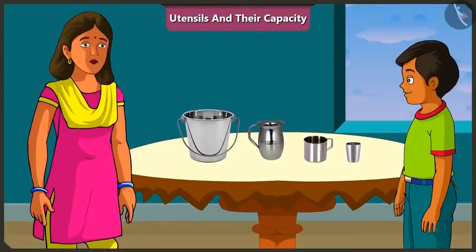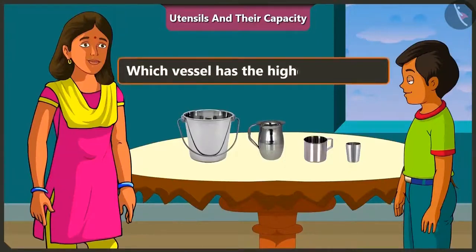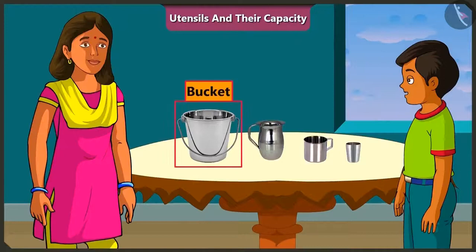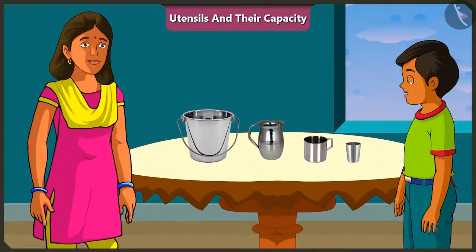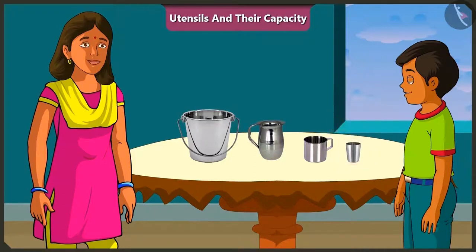Great! Mishtu, now tell me, which of these vessels has the greatest capacity? The bucket has the most capacity. And which vessel has the least capacity? The smallest vessel is the glass. So, the glass has the least capacity. Well done, Mishtu. Come on, let me show you something.